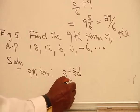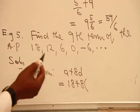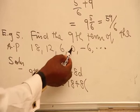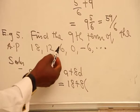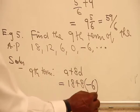And then your A is the first term of the AP, which is 18, plus 8 times D. Our D here is the common difference. You can see 0 minus 6, or 6 minus 12, or 12 minus 18, which will give you minus 6.